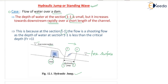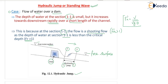This is because at section 1 the flow is shooting flow, that is your Froude number FR greater than 1. As the depth of water at section 1 is less than the critical depth, FR is greater than 1. When the depth of water is less, velocity will be more; when velocity is more, the Froude number will be more, because FR equals v divided by root of (g·d). So when cross-section area is less, velocity is more and Froude number increases.